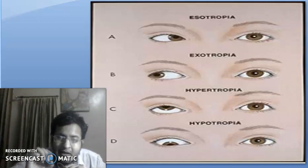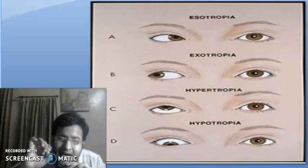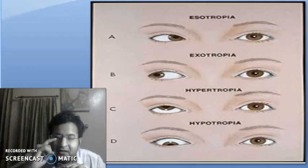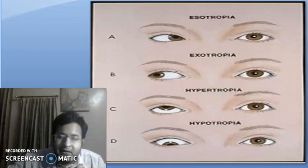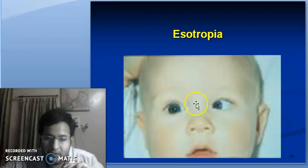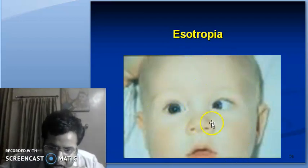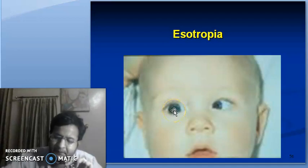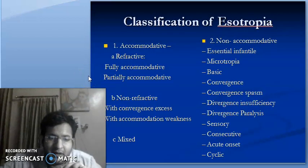When the strabismic eye moves inward it is known as esotropia, when it moves outward it is known as exotropia. When one fixating eye is in the primary position and the other eye moves upward it is known as hypertropia; when it moves downward it is known as hypotropia. Here is an example image of esotropia in a child — the inward, medial alignment of the strabismic eye — and you can see the light reflex in the cornea.